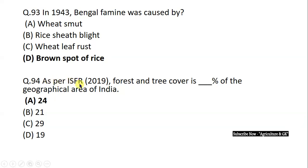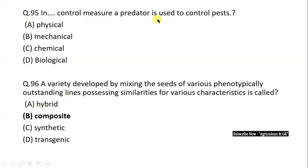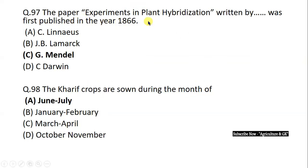As per ISFR 2019, Indian State Forest Report, forest and tree cover is 24% of the geographical area of India. In biological control measure, a predator is used to control pests. A variety developed by mixing seed of various phenotypically outstanding lines possessing similarities for various characteristics is called composite variety. The paper 'Experiments in Plant Hybridization' written by Gregor Mendel, father of genetics, was first published in the year 1866.